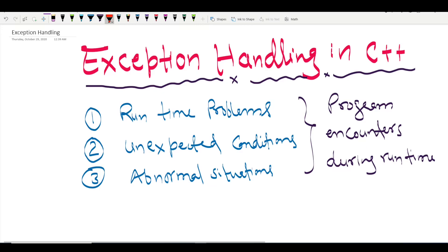To understand all these things, let's discuss a famous and common example to understand the concept of exceptions, and after that we will talk about the way we can handle such abnormal situations in our code using exception handling in C++. The simple program I am going to talk about is divide by zero.